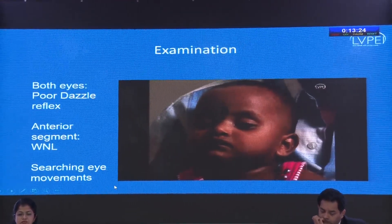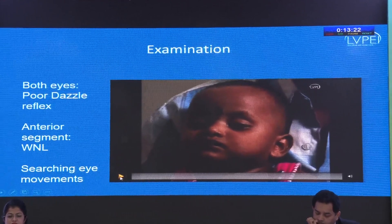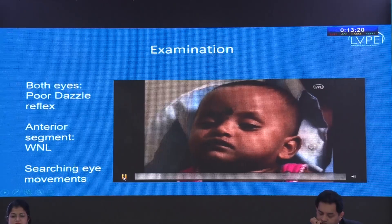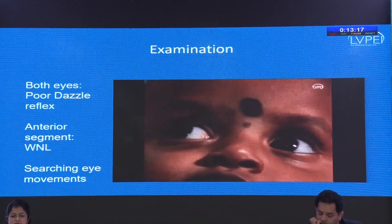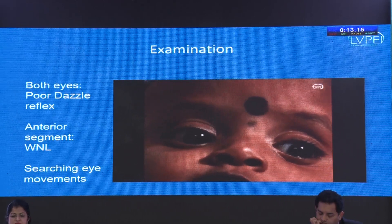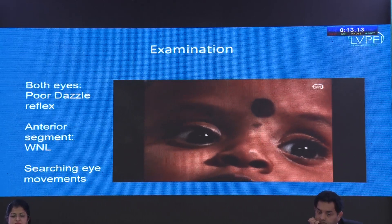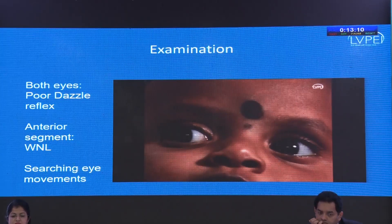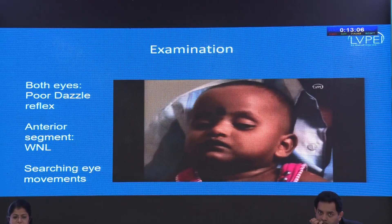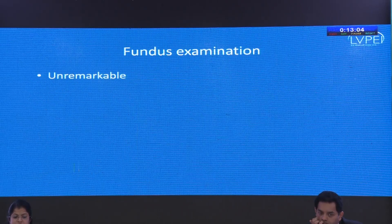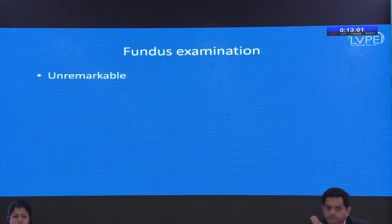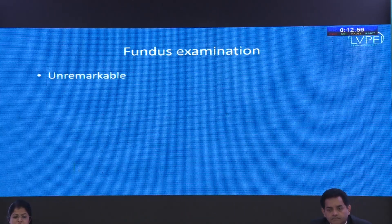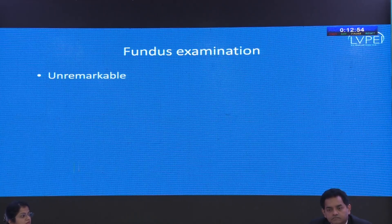This is a representative video of a similar patient. We can see poor dazzle reflex in both eyes; the child is not interested in targets and has searching eye movements — more like a wandering fixation. The anterior segment was within normal limits in both eyes, and the fundus examination was unremarkable at this age. It is possible that even with retinal pathology, the child may appear to have a completely normal-looking fundus at a very young age.